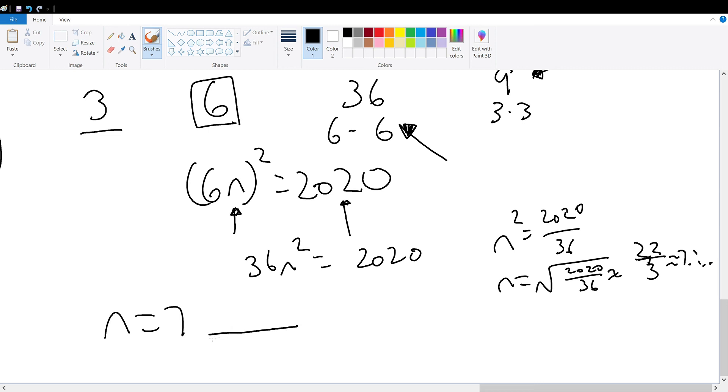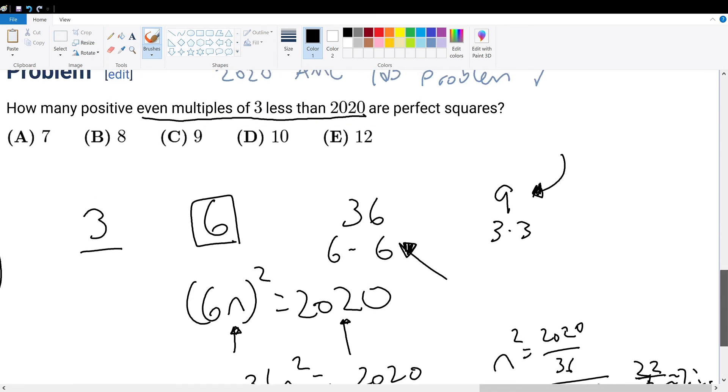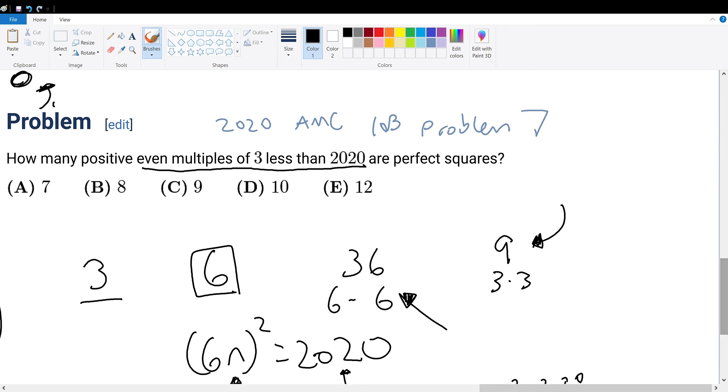So this in short means that there are 7 numbers that are perfect squares, multiples of 3, even numbers that are less than 2020. So our answer choice is A.